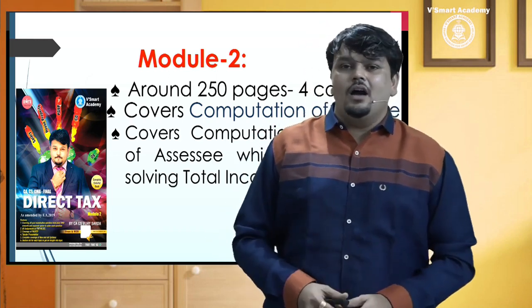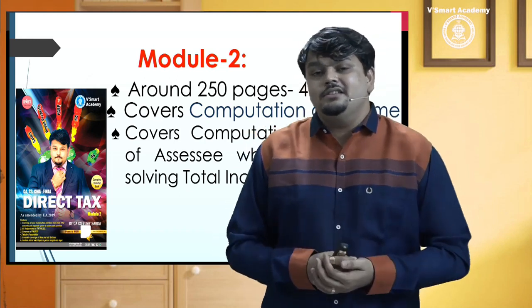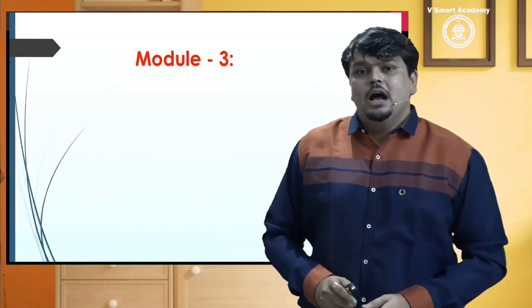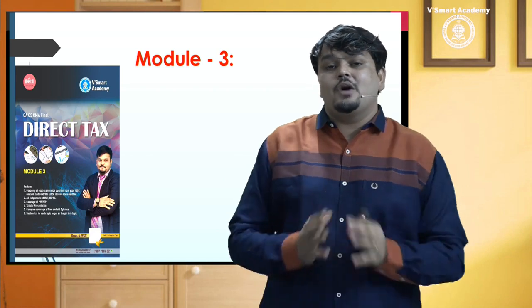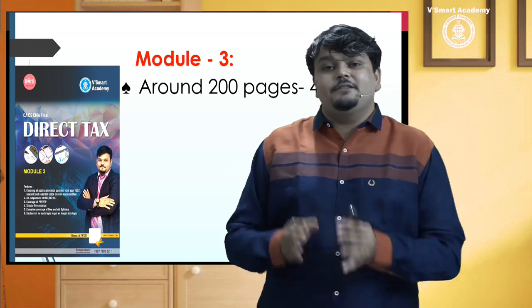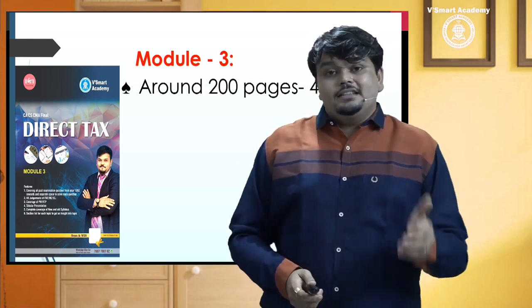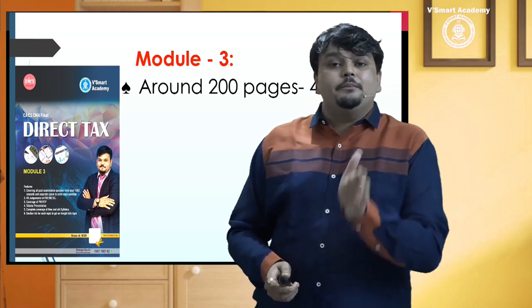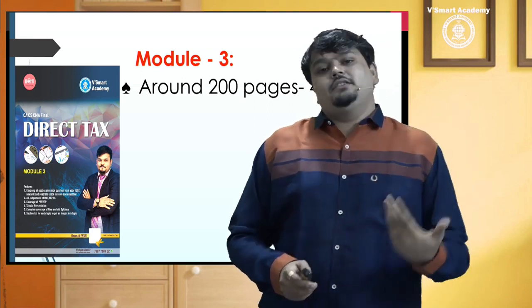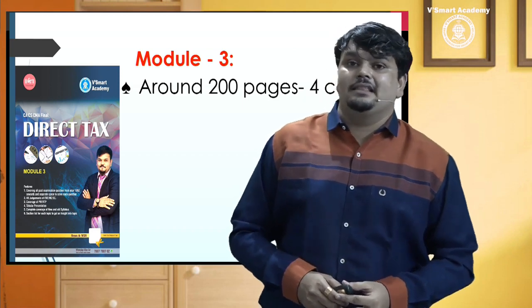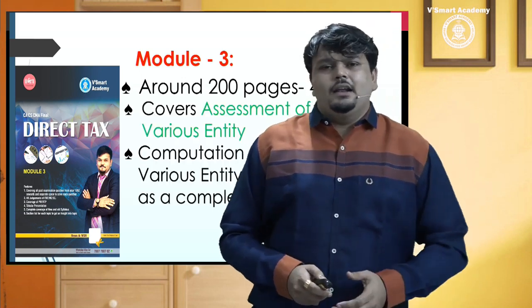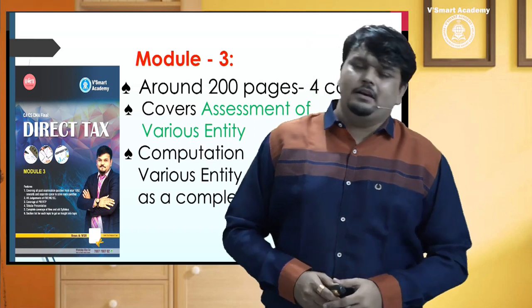Aapne offices mein bahut saare logon ne seekha hoga, but aapko karib 3 se 4 saal ho chuke honge PGBP, capital gain jaisa chapter pada hai. Again, aapko zero se padhne ki zaroorat hai, woh yahaan pe karvaaya jaata hai. Agar main third module ki baat karoon, toh ye ek aisa module hoga jo aapko totally naya hoga, aapne kabhi nahi pada hoga. Jaise ki jab aap Inter ya IPCC mein the, tab tak ke aapne sirf taxation of individuals pada tha. Is baar aap taxation of HUF, AOP, BOI, cooperative society, tax planning, trust, aise kai associations ke definitions and tax liability, iske andar mein kya kiya jaata hai cover kiya jaata hai. Karib 200 pages ka book hoga, multi-color book, saare amendments plus questions iske andar mein cover kiye gaye hain.